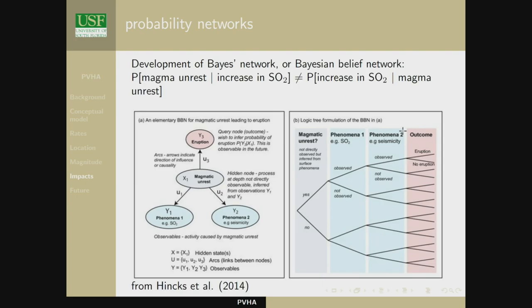Quickly, one thing about event trees — the most common tree used in volcanology. Things progress from left to right: there's a magmatic system, magmatic unrest, magma ascending, magma erupts, and so on. But there are issues with this. Using Bayes' theorem: the probability of magmatic unrest given an increase in SO₂ is NOT the same as the probability of an increase in SO₂ given magmatic unrest. That's a pretty important scientific idea, somewhat violated in the event tree. Thea Hincks described a hidden Bayesian network, a more sophisticated model that I think will gain traction in the community.